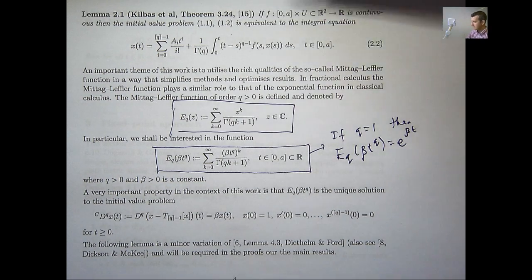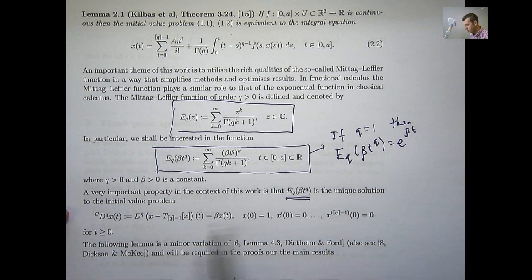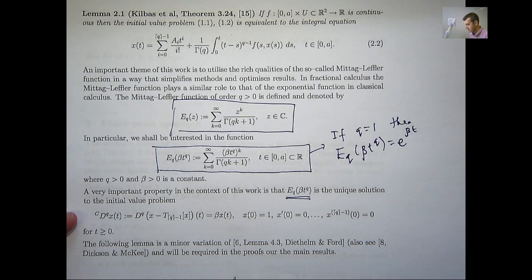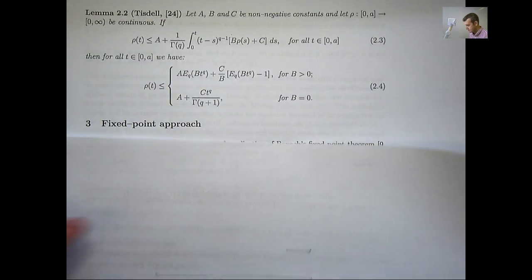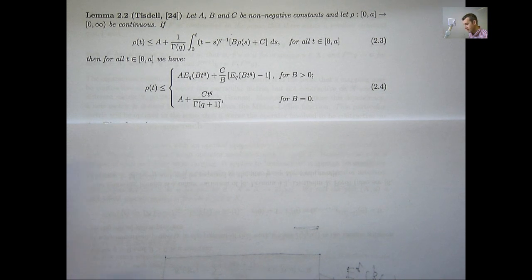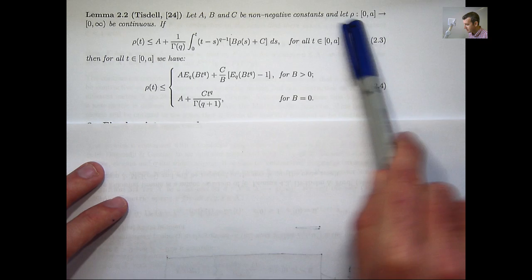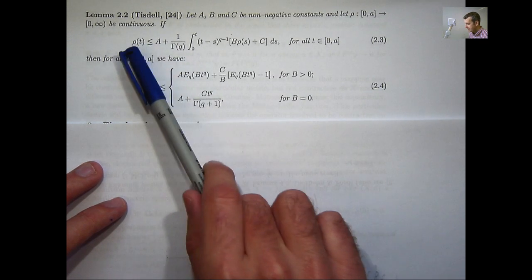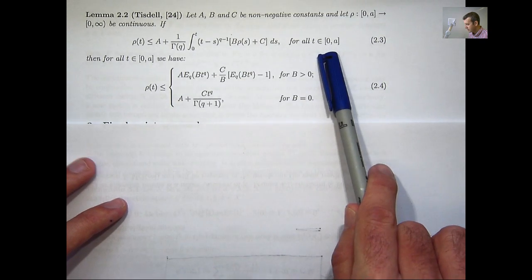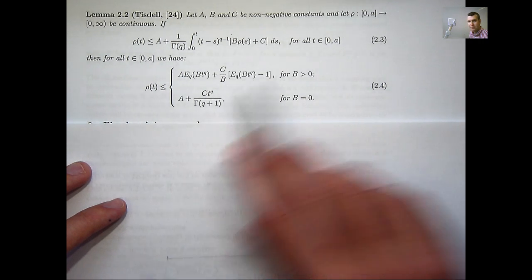Another important quality of the Mittag-Leffler function is the following: this function is the unique solution to a simple linear initial value problem, and we will use that in the proof of the main result. The last preliminary result we will need is the following general Gronwall inequality — a fractional analog of the famous Gronwall inequality. Let a, b, and c be non-negative constants, and let ρ be a continuous non-negative function defined on the interval. If ρ satisfies this integral inequality on the interval, then on that interval we have the following inequality for ρ. We will apply that a little bit later on.